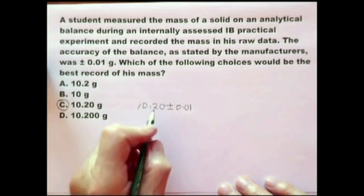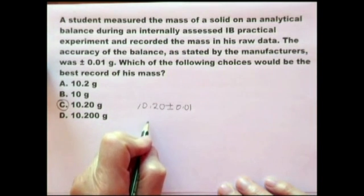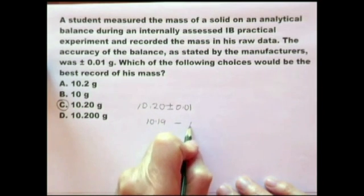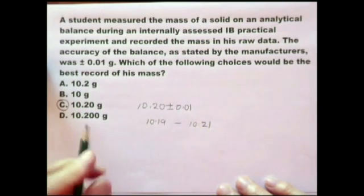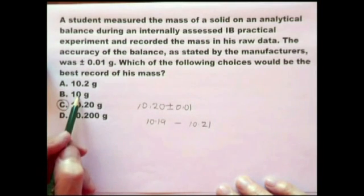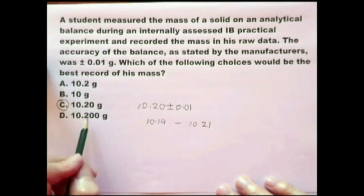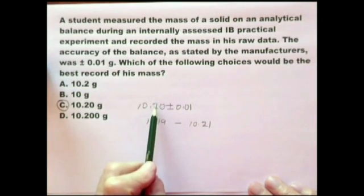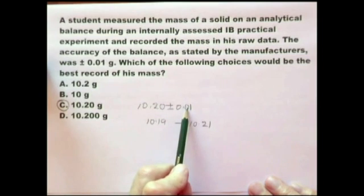That's simply because you are saying the final result is somewhere between 10.19 and 10.21. In this way it wouldn't make sense to give the answer any other way. You have to have the same number of decimal places in the number and in the accuracy.